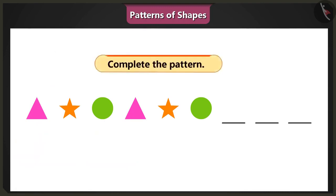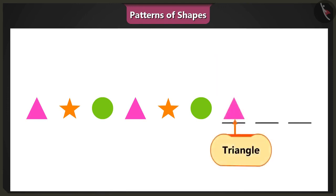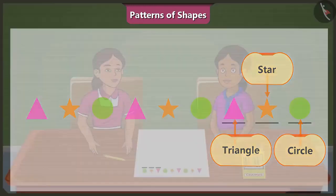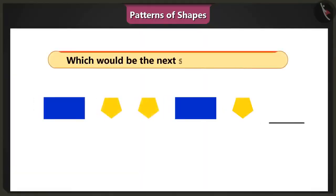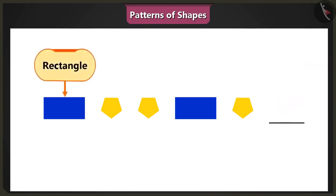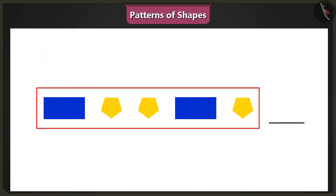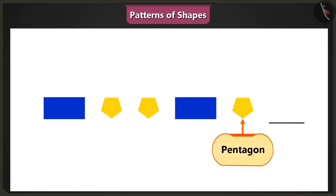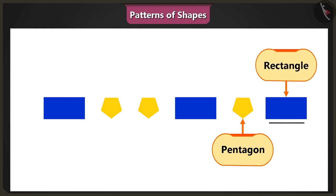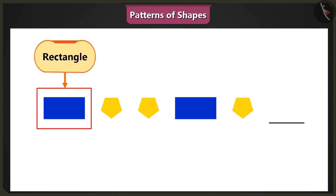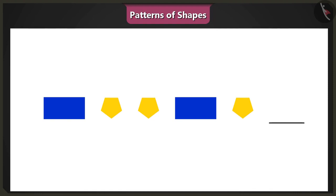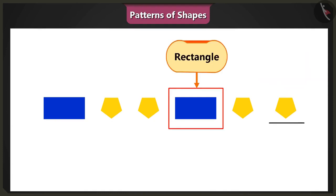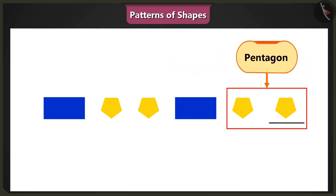Yes, so now please complete the pattern. In this pattern, the next shape will be a pink triangle, then an orange star, and then finally a green circle. Very good, Winnie. Now it's my turn — in the given pattern, which shape will come next? In this pattern, a rectangle and a pentagon have been repeated. Therefore, the next shape will be a pentagon followed by a rectangle. Wait, look carefully — in this pattern, one rectangle is followed by two pentagons and we need to repeat this. So the next shape will be a pentagon, giving us a pattern of one rectangle and two pentagons.